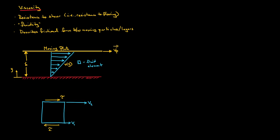Consider this schematic where we have a moving plate being pulled in one direction and a fixed wall below it. We will show later in our study of fluid mechanics that the velocity profile for the fluid between the moving plate and the fixed wall is given by V = V_p · (y / δ), where y is the position and δ is the distance between the moving plate and the fixed wall.